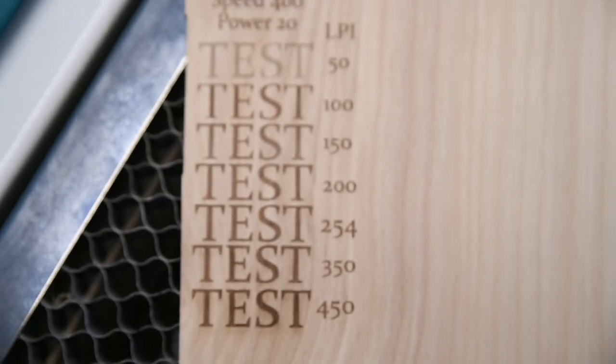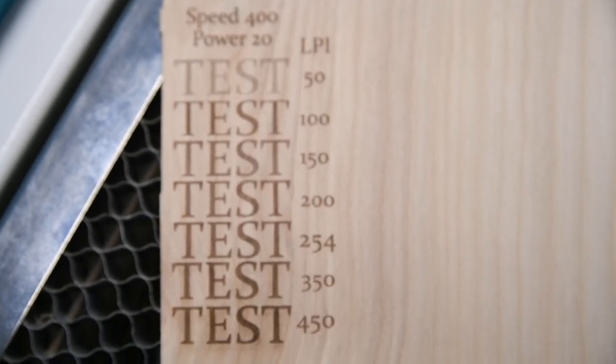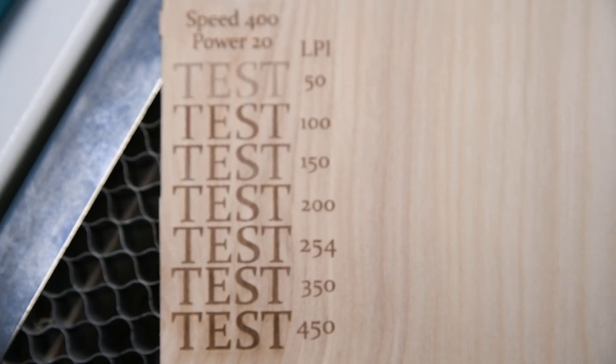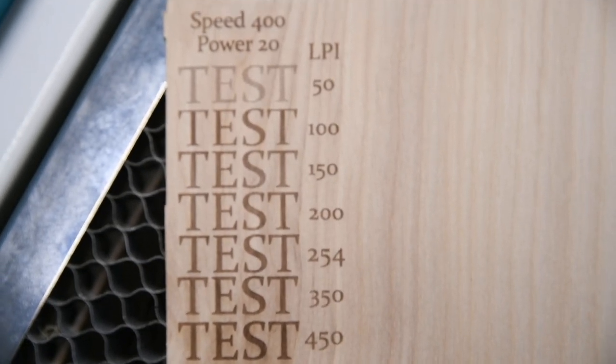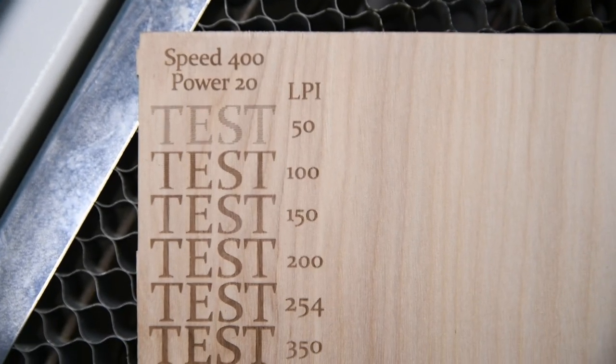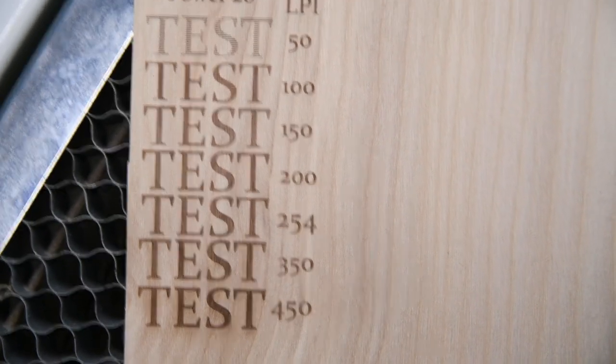There is a built-in test in Lightburn but I just wanted to kind of show like this, you know, just to show the text and how it would look different. You can see there, that's all the same speed and power, but the more lines per inch you do, the more material's being removed and the darker it gets.